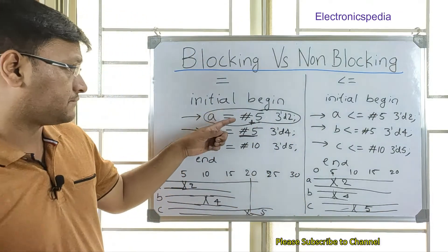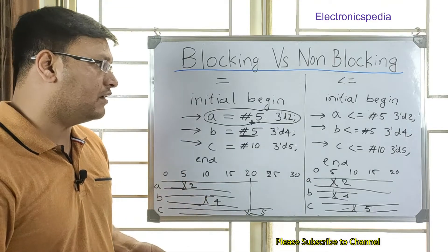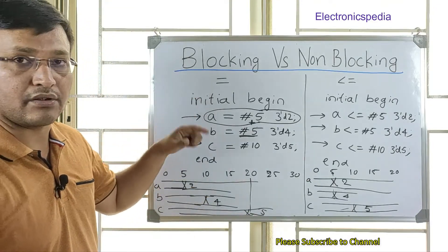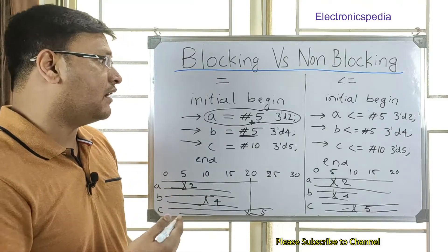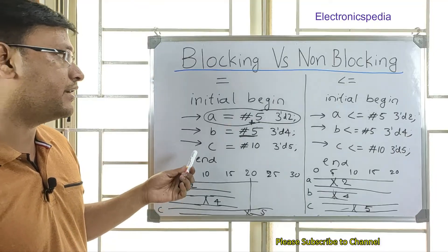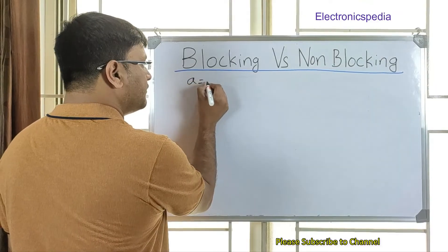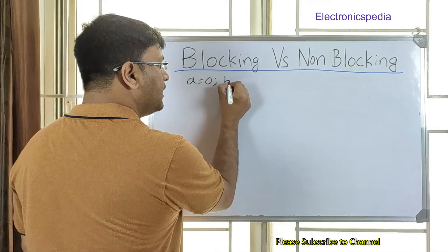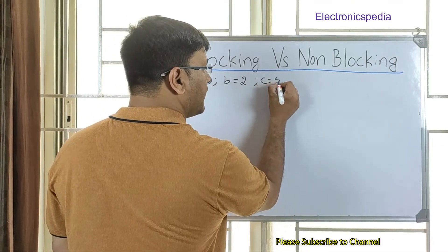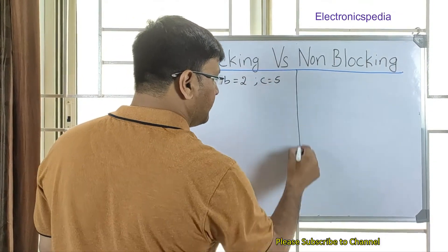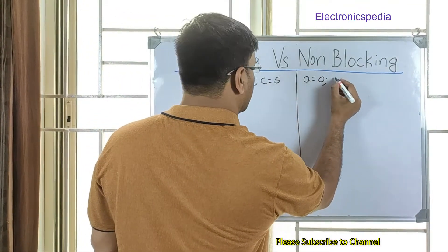So that is the main difference between blocking and non-blocking. Now I'll take another example to explain how blocking and non-blocking statements get values updated after each clock cycle, or in a combinational context. Assume we have three signals: A with an initial value of 0, B with a value of 2, and C with a value of 5.